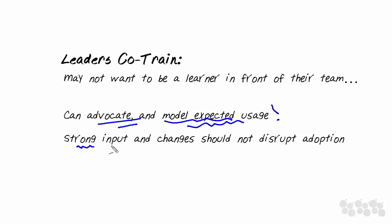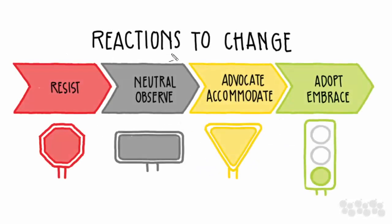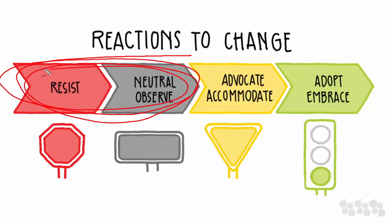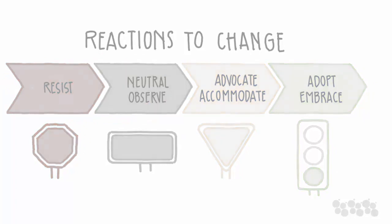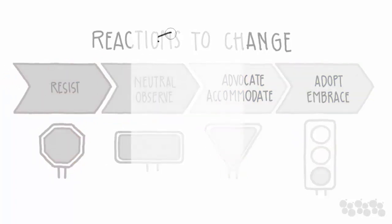And if that leader has questions or really strong input or observations or changes that must be made, you want to know that input before it is said in front of the staff. Because here's what I know for sure: if you have a percentage of your users who are on the spectrum of neutral wait-and-see to resisting, they will latch on to any perceived flaw as a reason to just wait.